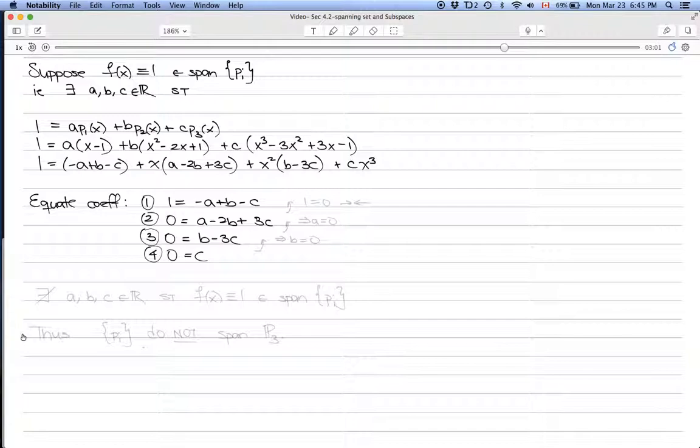By back substitution, c = 0. Substituting back implies b = 0. Substituting again implies a = 0. If we substitute a, b, and c equal to 0, we get 1 = 0, which is a contradiction.